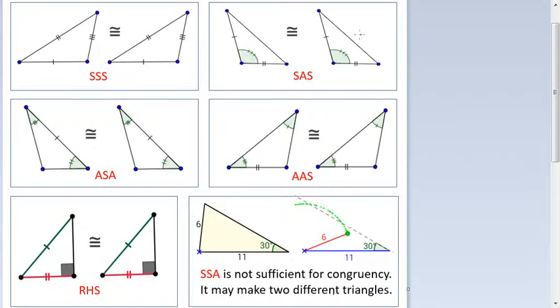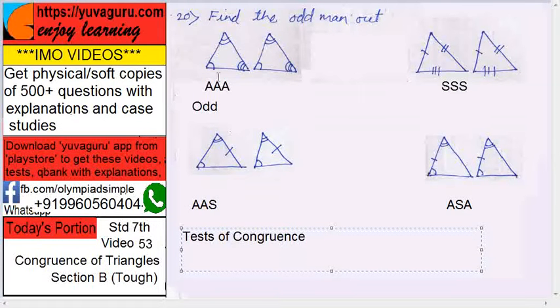But is there any AAA? No, because AAA is not the test for congruence, so this is the odd man, first one.